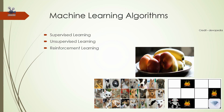A machine learning process involves creating mathematical and statistical algorithms that can accept input and use some sort of analysis to predict the output. The first step is to collect the data sets for analysis. Once the data is collected, select the type of algorithm to be used, then build a model around it, train the model with the test data sets, and improvise the model accordingly for future decision making.